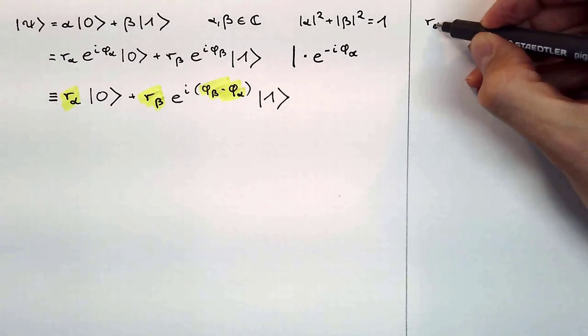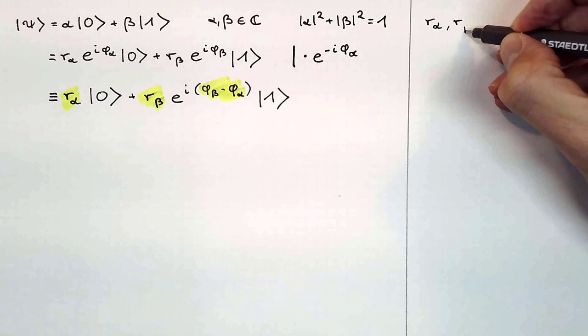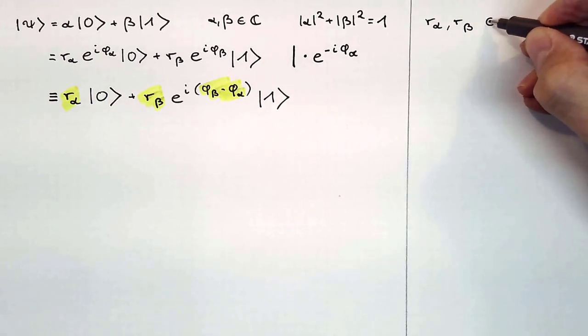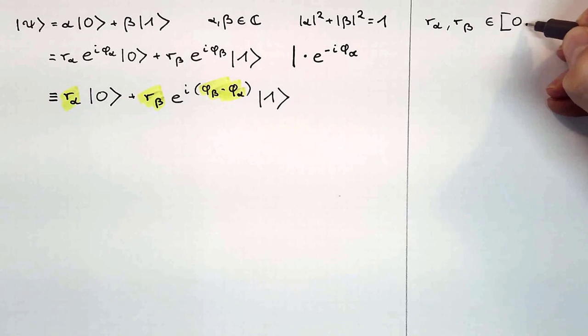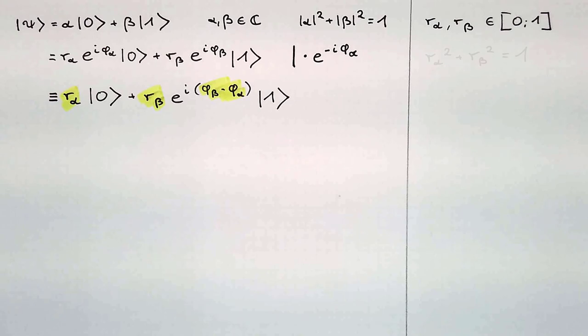So, let's look now at the connection between r_alpha and r_beta. These numbers are the absolute values of the amplitudes alpha and beta and therefore values between 0 and 1. The sum of the squares of these numbers is 1. Remember that the square of the absolute value of each amplitude indicates the probability to measure the qubit in the corresponding basis state. And as the qubit will be for sure in one of the two basis states when it is measured, the sum of the probabilities must be 1. And that's exactly what this equation says.